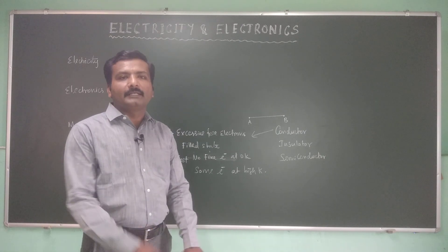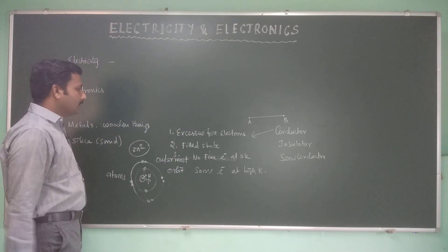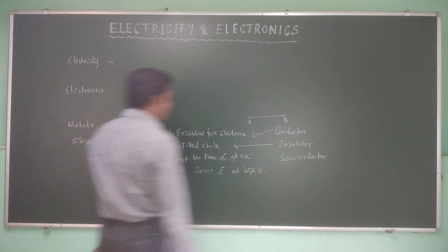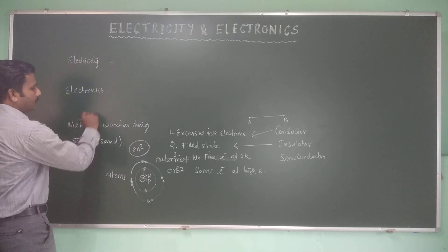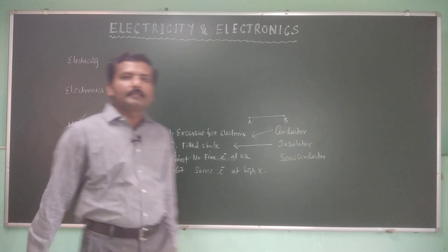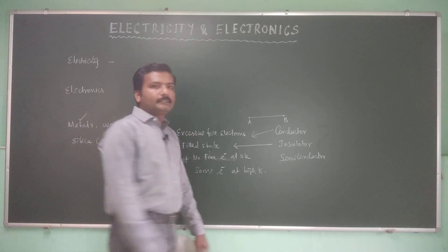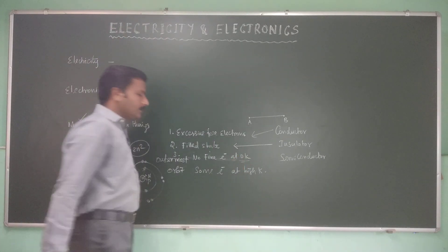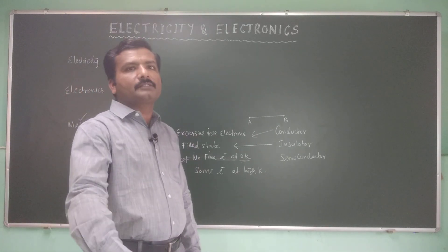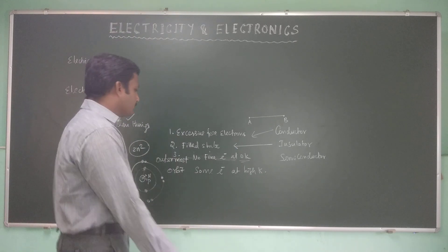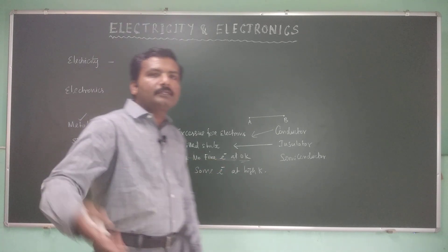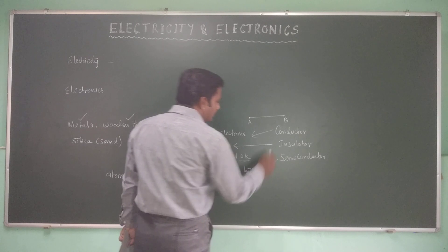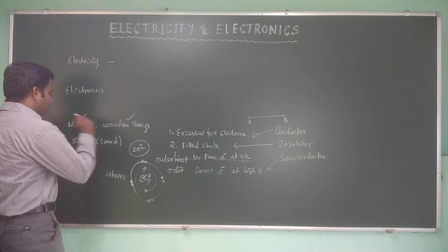Some materials like rubber, glass rod, and wooden table have no free electrons to move from one point to another — they are termed insulators. A third category exists where the electronic state is filled and there are no free electrons at zero Kelvin. But if you supply some energy in the form of heat, it excites electrons to become free, making it behave partially like a conductor. This is called a semiconductor.